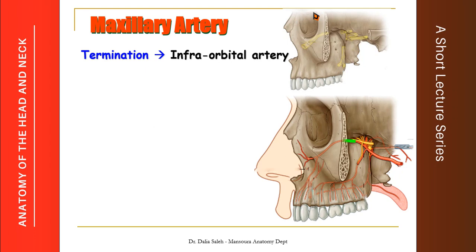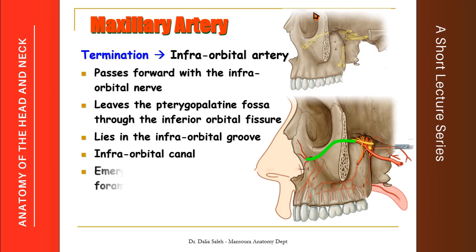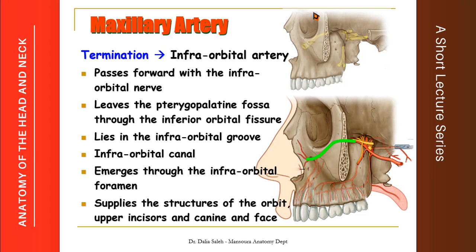The terminal branch of the third part of the maxillary artery is called the infraorbital artery. It passes forward along with the infraorbital nerve, leaves the pterygopalatine fossa through the infraorbital fissure, lies in the infraorbital groove and infraorbital canal, then emerges through the infraorbital foramen onto the face. It supplies structures of the orbit, the upper incisors and canine teeth, and distributes to facial structures including the lateral part of the nose, the upper lip, and the lower eyelid.